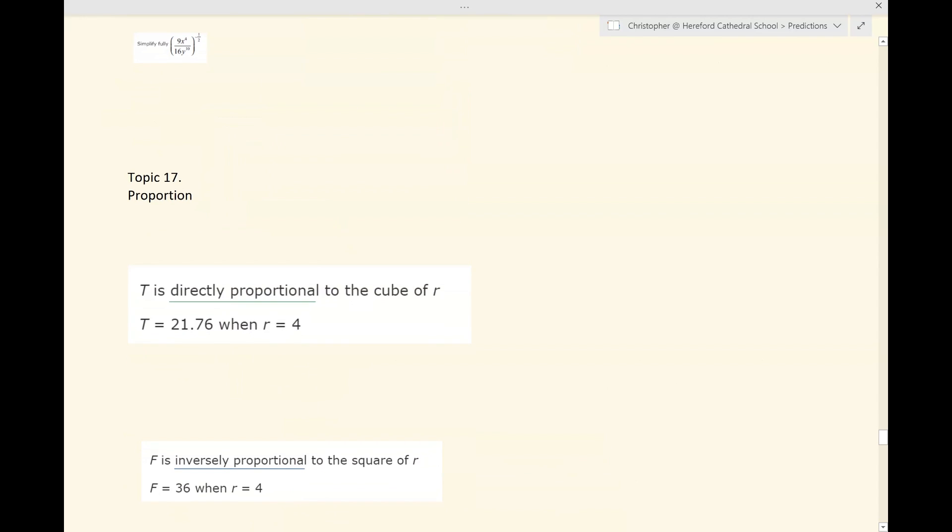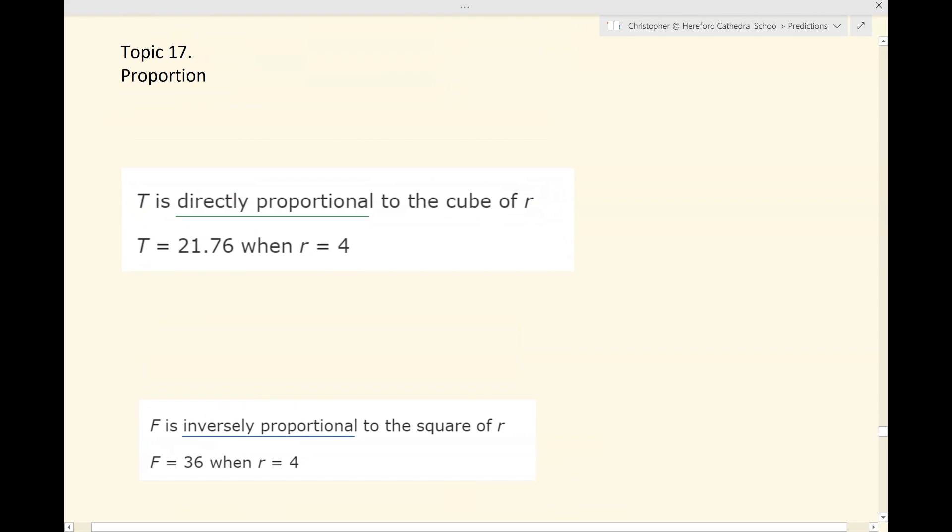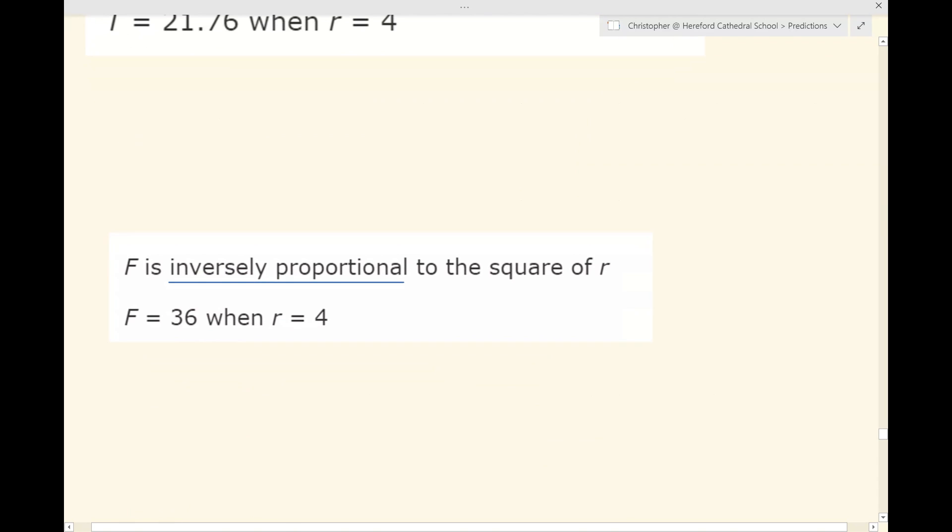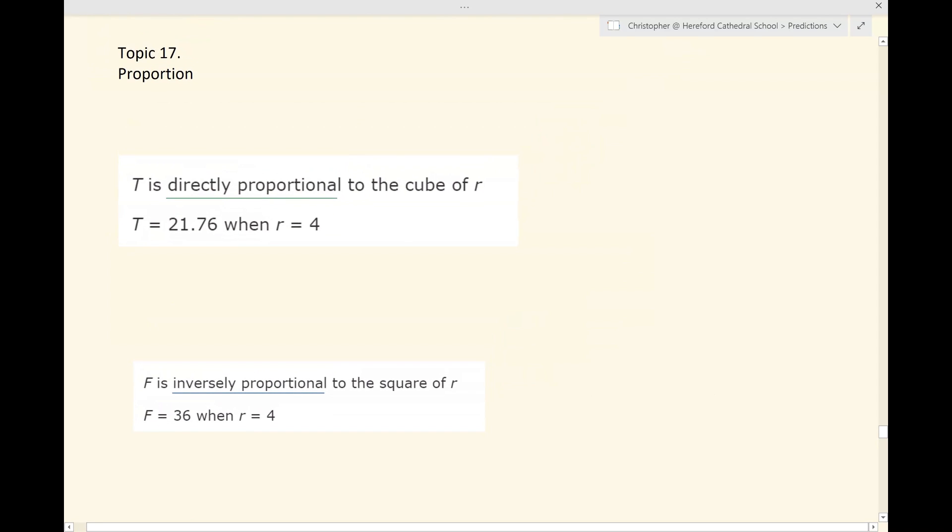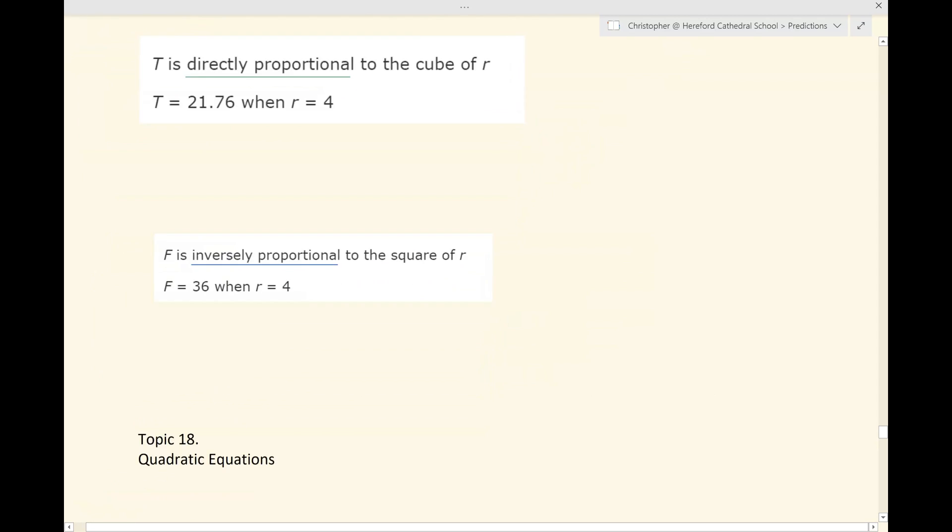Proportion. Here's a very common topic which hasn't come up yet. I would expect a question on two variables which are directly proportional. In this top one here, you'd probably have to find a formula for T in terms of R, and then use that formula to find the value of R given a value of T, or to find a value of T given a value of R. And if you have to tackle a question where two variables are inversely proportional, much the same process. In this question, I imagine you'd have to find a formula for F in terms of R, and then use that formula to find the value of F given a value for R, or to find the value of R given a value of F. But proportion, I would think, is a dead cert. I've said that aloud. A dead cert for paper two.